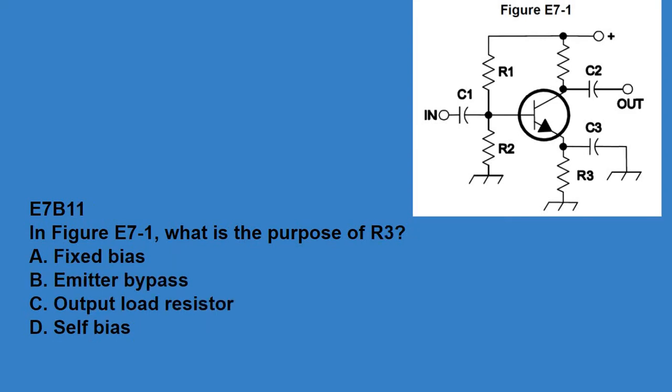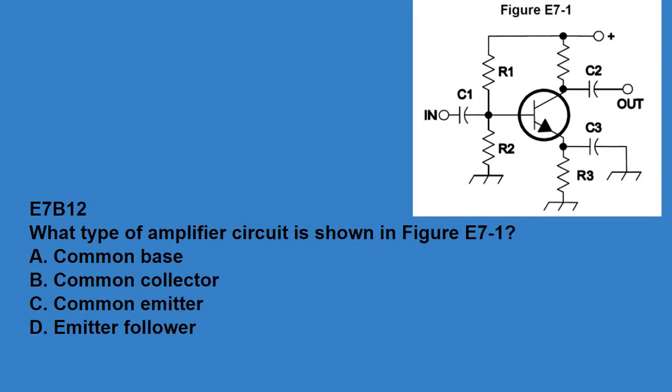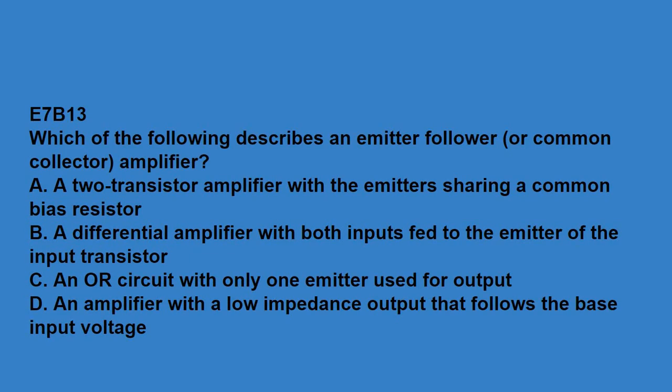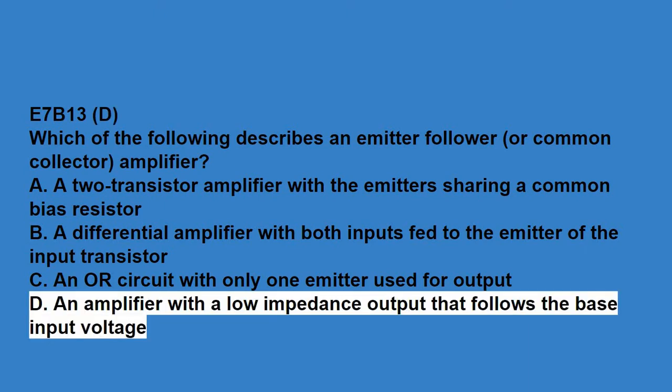E7B10, in figure E7-1, what is the purpose of R1 and R2? Voltage divider bias. E7B11, in the figure E7-1, what is the purpose of R3? Self-bias. E7B12, what type of amplifier circuit is shown in figure E7-1? That's a common emitter. E7B13, which of the following describes an emitter-follower, or common collector, amplifier? An amplifier with low impedance output that follows the base input voltage.